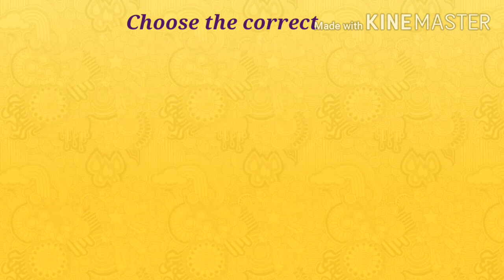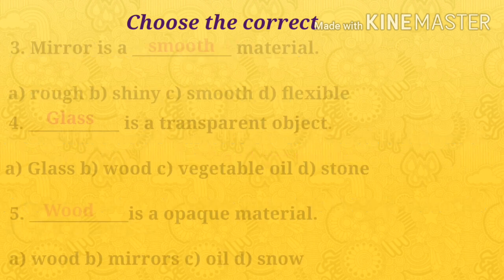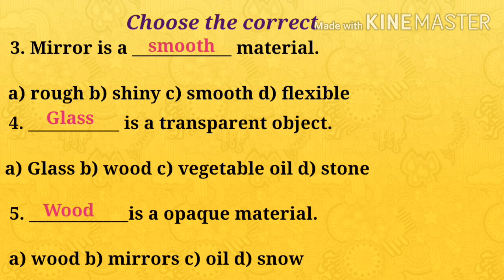Again, reading from the first question: eraser is made of rubber; materials which cannot be compressed, cut, bent or scratched are called hard materials; mirror is a smooth material; glass is a transparent object; wood is an opaque material.